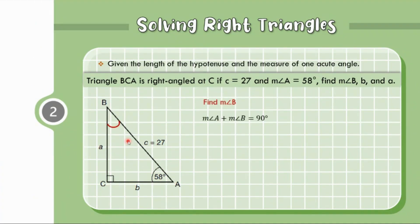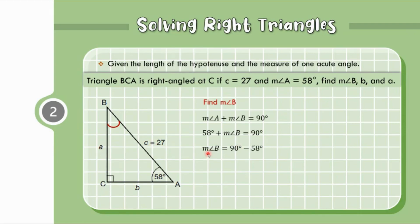Let us sketch triangle BCA with hypotenuse equal to 27 and angle A equal to 58 degrees. Since measure of angle A plus measure of angle B equals 90 degrees, substituting: 58 degrees plus measure of angle B equals 90 degrees. Therefore, measure of angle B equals 90 minus 58, which is 32 degrees.